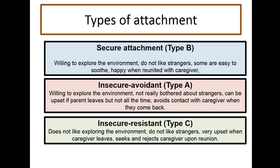What you need to know for the examination is that there are three types of different attachments. Secure attachment is always Type B. Insecure avoidant — think of the A as avoidant, so Type A. And the other one, resistant, is just Type C. Make sure you remember which types they are.